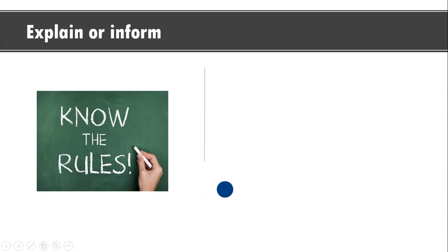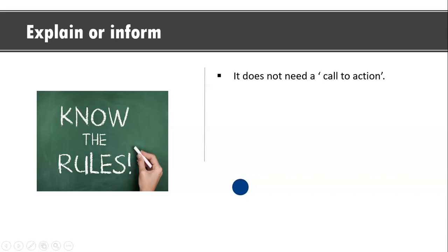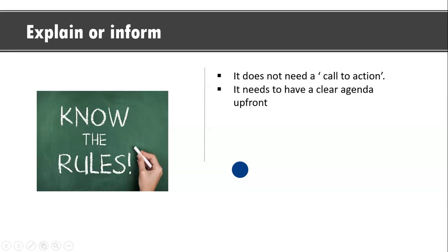What are some of the rules you need to remember if you are writing in this particular category? The first one is that it does not need a call to action. Because you are informing or explaining something, it does not necessarily need a call to action. However, it needs to have a clear agenda up front — you should clearly state what is the purpose of your email and what you are going to explain.